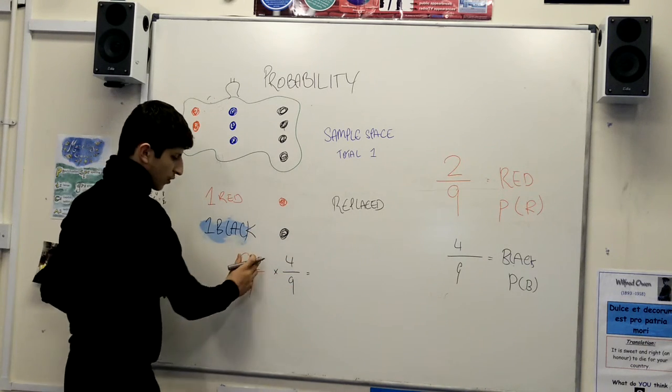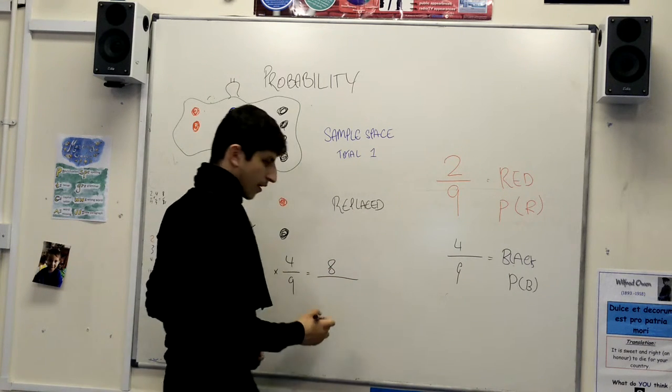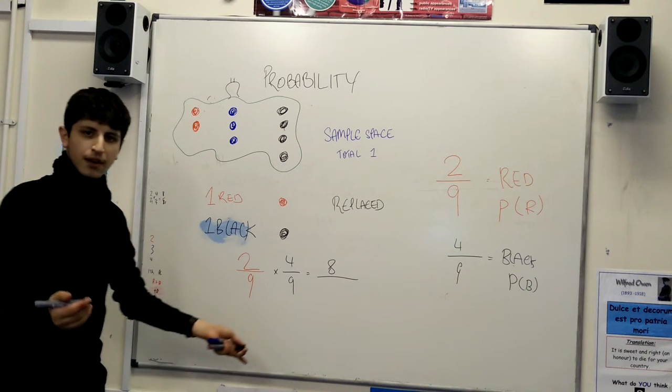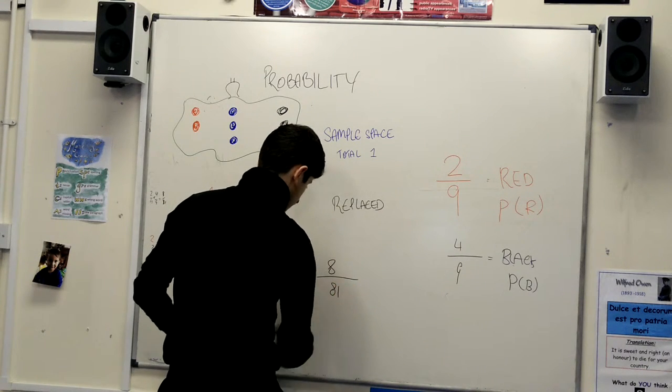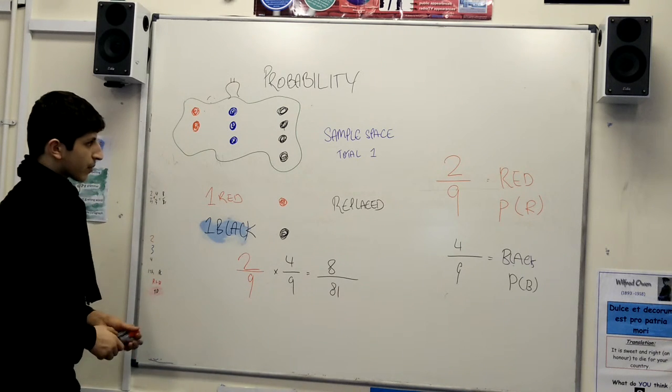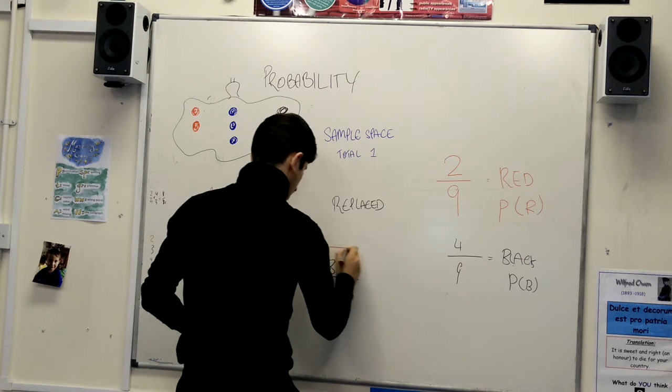Very simple. 2 times 4 is 8. I don't believe you'd know that. But, 9 squared, 9 squared, square numbers, 81. 8 out of 81. That's the probability of getting a red and a black.